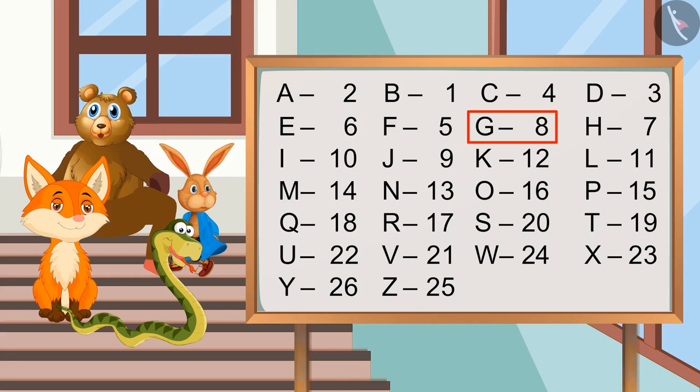Similarly, the number code for G will be eight and H will be seven. And for I it will be ten, for J it will be nine. Now, instead of directly writing number codes for the alphabet, we will make pairs of alphabets and interchange their codes with one another.